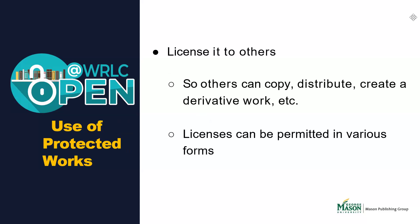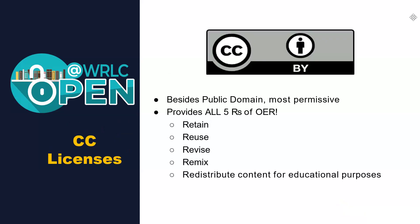The focus of our discussion today will be on Creative Commons licenses. CC licenses are a type of copyright license that allows copyright owners to provide upfront permission on how to use their work. They are a type of open license because they allow users to retain, reuse, revise, remix, and redistribute works for educational purposes. There are six types of licenses with varying degrees of permission, ranging from the most permissive CC BY license to the least permissive CC BY Non-Commercial Non-Derivative license.